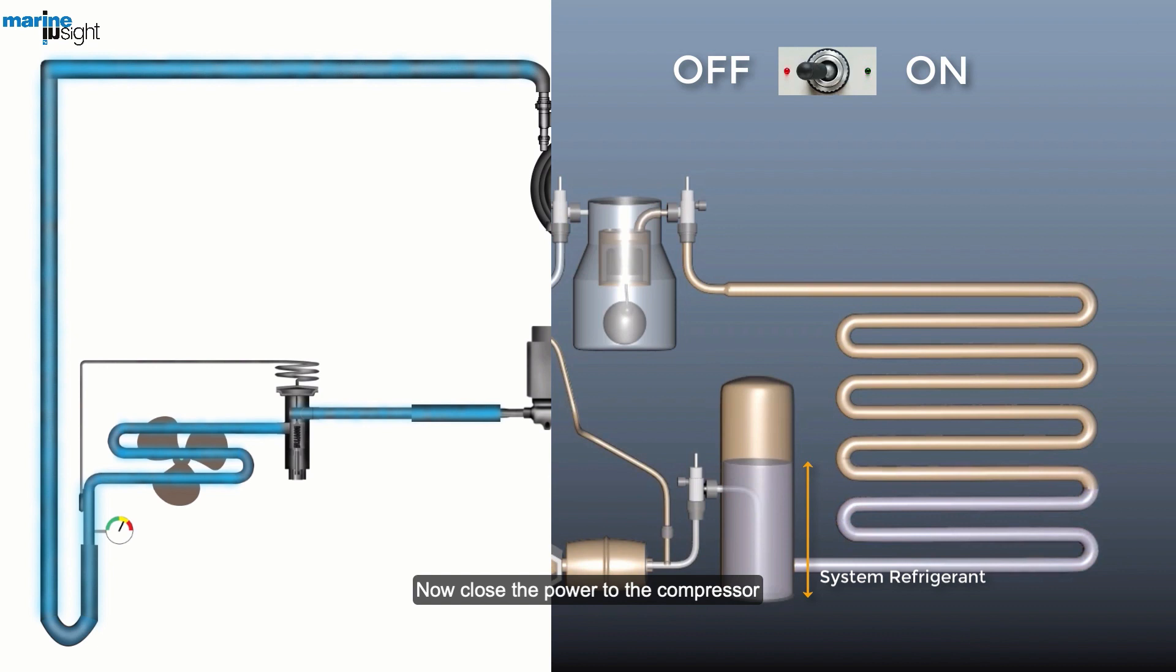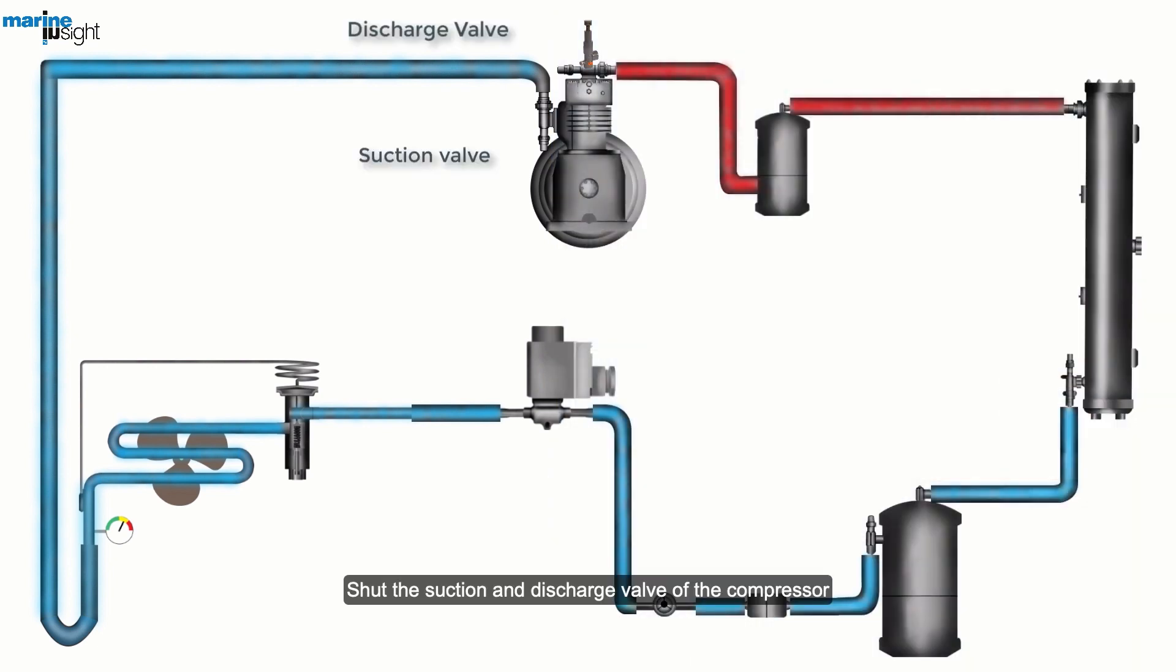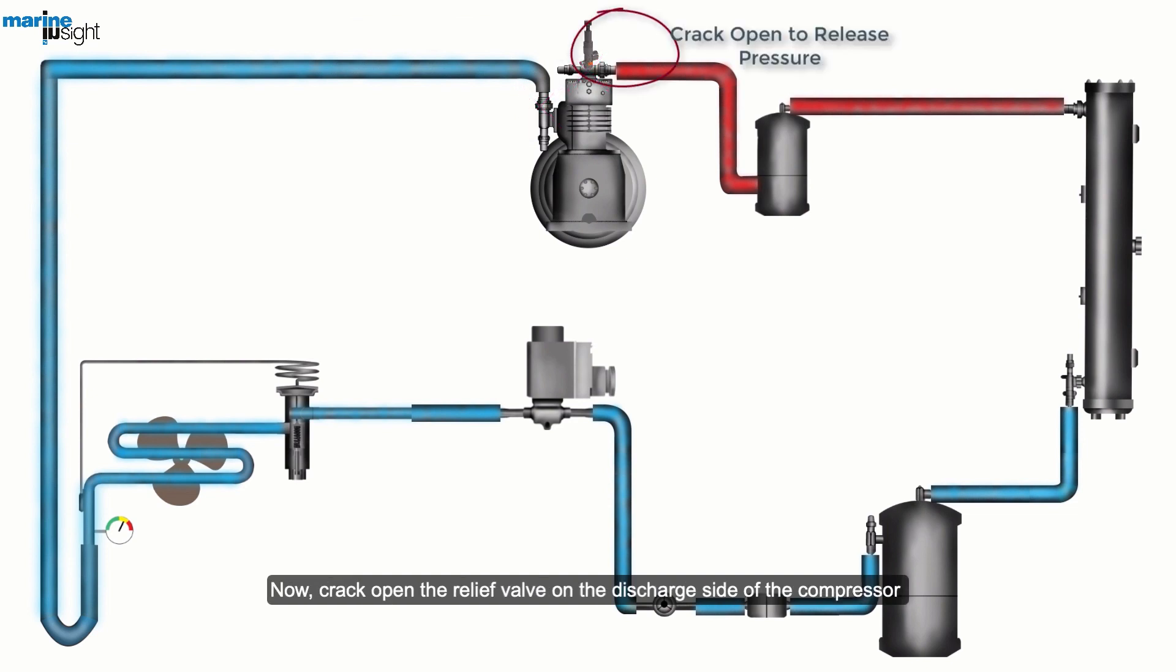Now close the power to the compressor. Shut the suction and discharge valves of the compressor. Now crack open the relief valve on the discharge side of the compressor to release any excess pressure, which will make it easy to charge the lube oil.